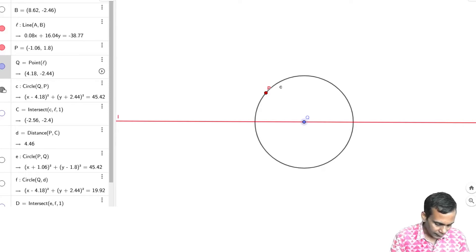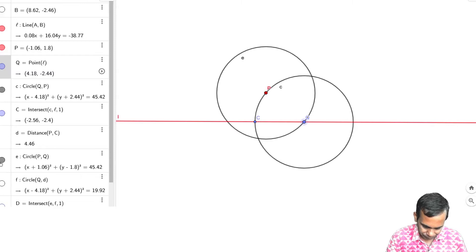Okay, and now you mark as C the intersection of this circle with the line L. Now let D be the distance between the point P and C. So this distance we are calling it D.